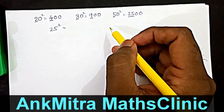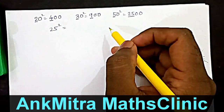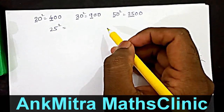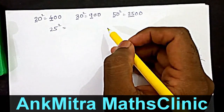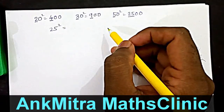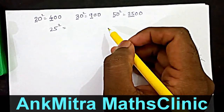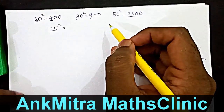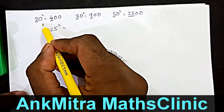Hello everyone. Today I am going to show you a multiplication method or trick which we can use to multiply two numbers which are close to each other. For this we need to know the squares of certain round numbers or easy-to-calculate numbers. So let's quickly start with round numbers.